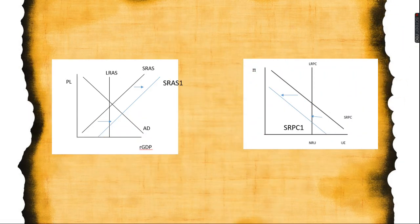Likewise, when the short run aggregate supply shifts, short run Phillips Curve shifts in a mirror image, but this time the entire curve shifts. For instance, when the short run aggregate supply shifts to the right, the short run Phillips Curve will shift to the left.